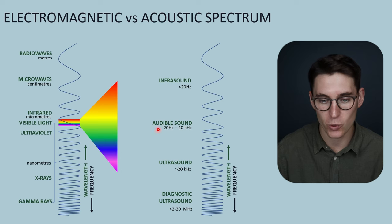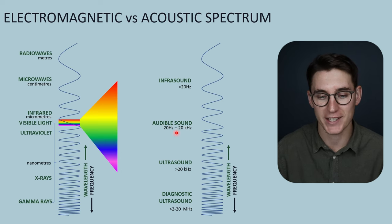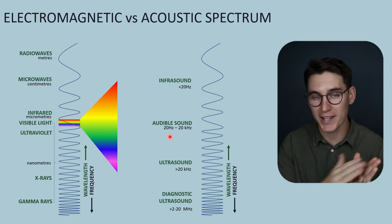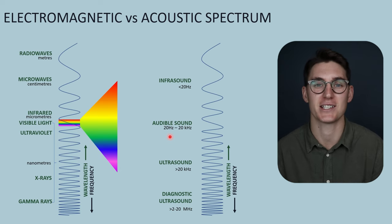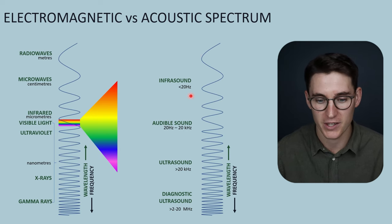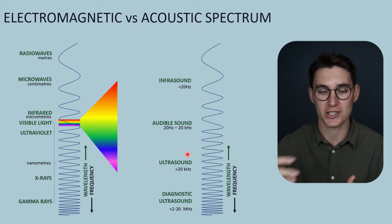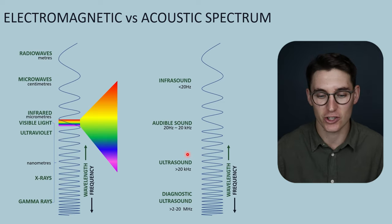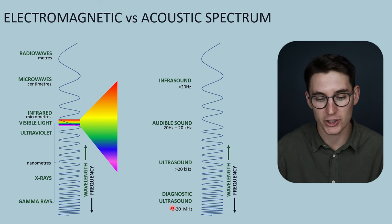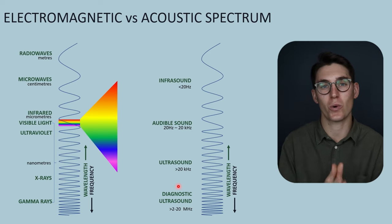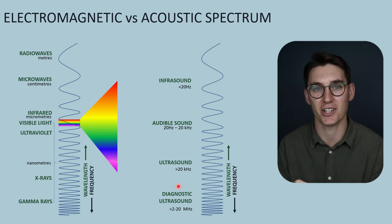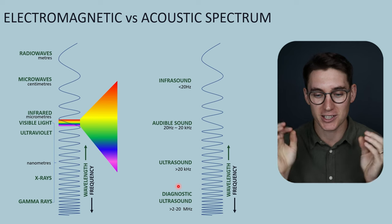Audible sound is between 20 hertz and 20 kilohertz — that is, 20 to 20,000 cycles passing a point per second. Anything with a frequency lower than 20 hertz is infrasound, which we cannot hear. Frequencies above 20,000 hertz are called ultrasound — we can't hear these either. Diagnostic ultrasound specifically operates between 2 and 20 megahertz, meaning 2 to 20 million cycles per second. We are dealing with very high frequency waves, and that is an important point to remember.